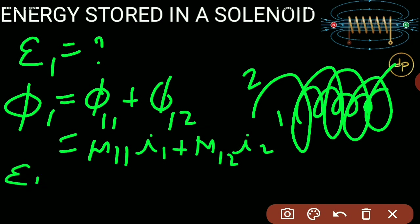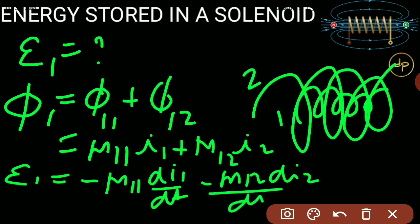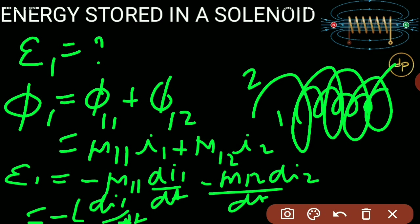By Faraday's law, the induced EMF in the first coil is minus dΦ/dt, which gives minus M₁₁·dI₁/dt minus M₁₂·dI₂/dt. Here M₁₁ is the mutual inductance of coil 1 due to its own current, which is called self-inductance L. So the net EMF in the first coil is minus L·dI₁/dt minus M₁₂·dI₂/dt. This is the total induced EMF in the first coil.